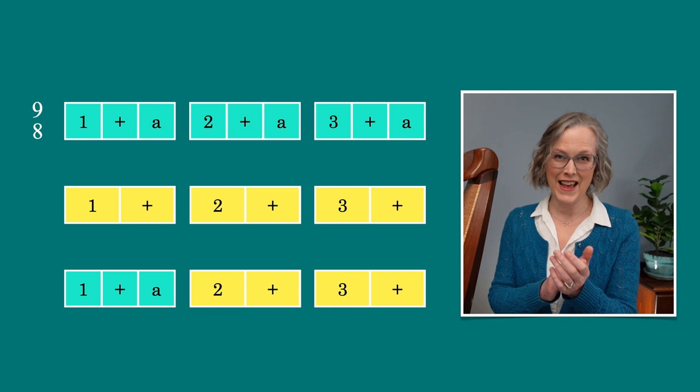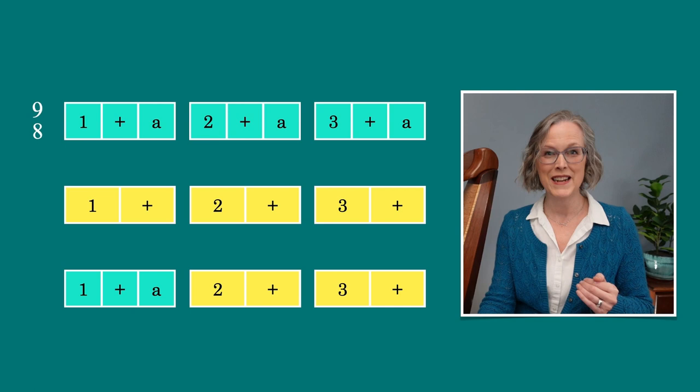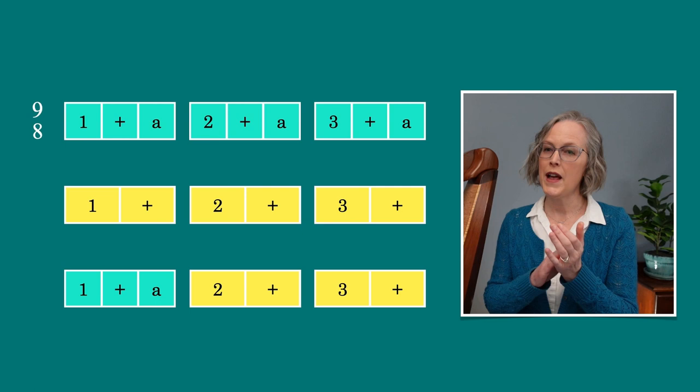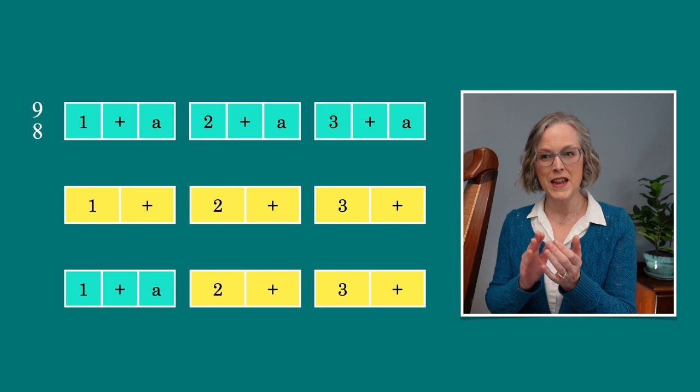Let's put the metronome back on and we'll practice clapping and counting all three lines. Okay, do this with me. Here we go. One, two, three. One and a, two and a, three and a. One and a, two and, three and. Very good.